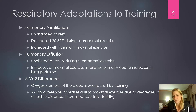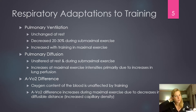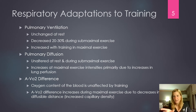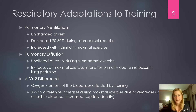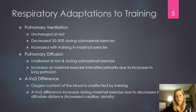We'll actually see a decrease in pulmonary ventilation during submaximal exercise because that exercise bout becomes easier — we become more efficient. For example, somebody who's untrained runs a 10-minute mile, and when they become more trained, that 10-minute mile feels easier. As it feels easier, we're also decreasing the amount of air we're bringing in at that level.